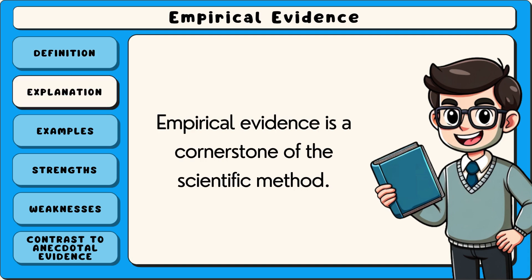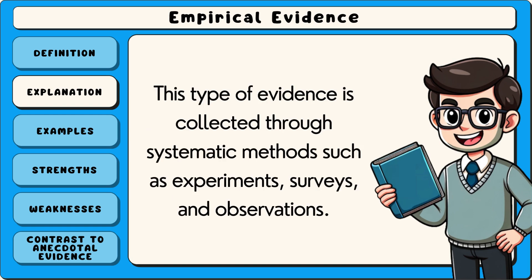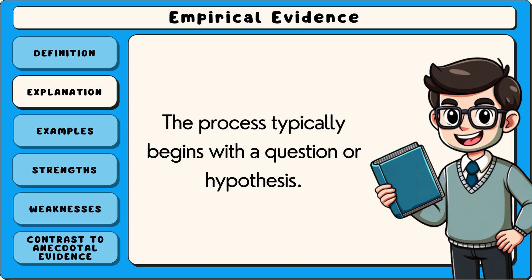Empirical evidence is a cornerstone of the scientific method. It ensures that knowledge is based on facts that can be verified, rather than opinions or beliefs. This type of evidence is collected through systematic methods such as experiments, surveys and observations. The process typically begins with a question or hypothesis.